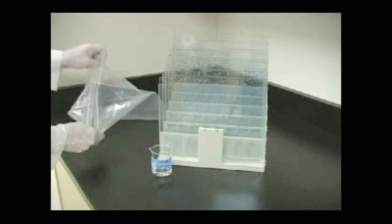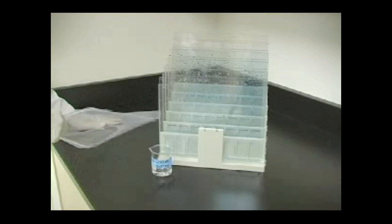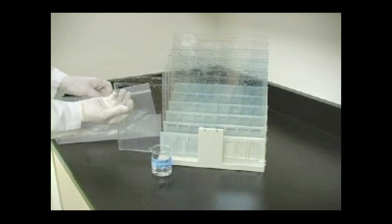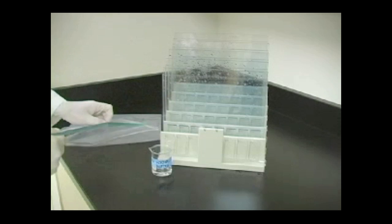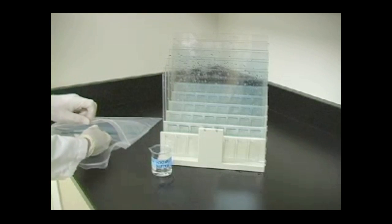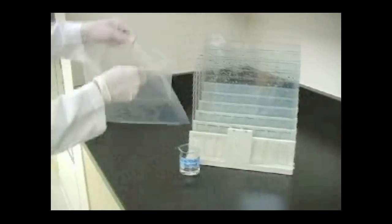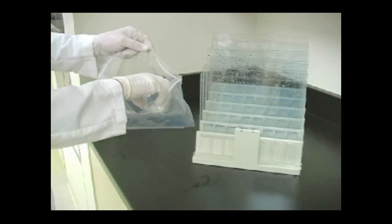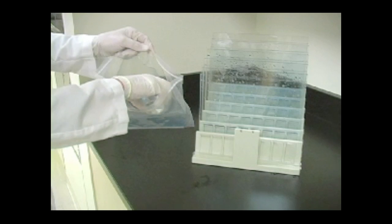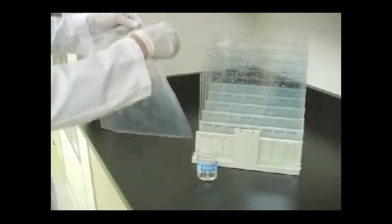The gels are now ready to use. To store, place the gel cassette in a tightly sealed container or ziplock bag. Add a few milliliters of 1x gel buffer to the bottom of the container and to the tops of the gels to prevent them from drying out. Store tightly sealed at 4 degrees Celsius.